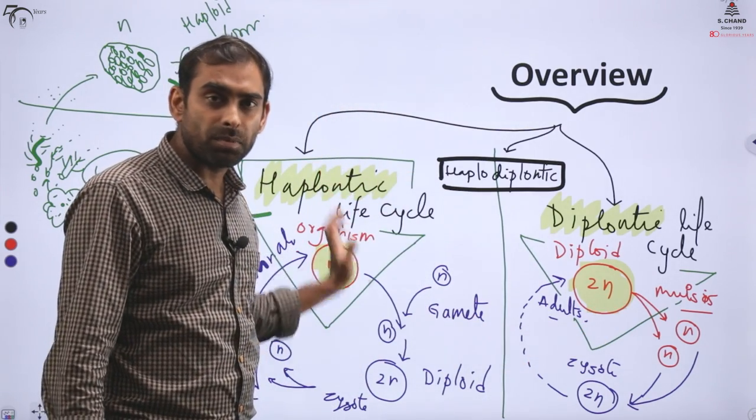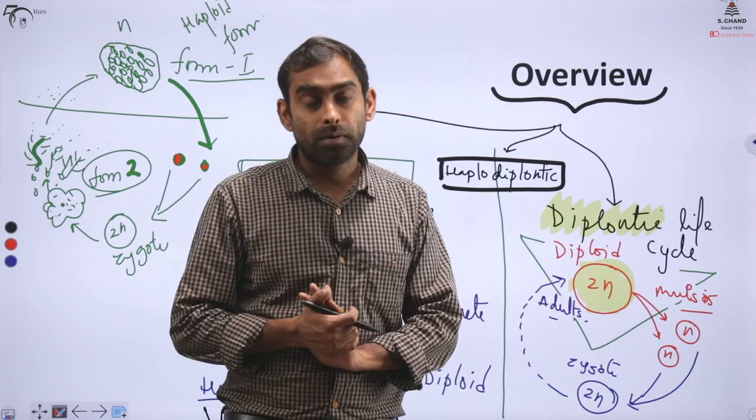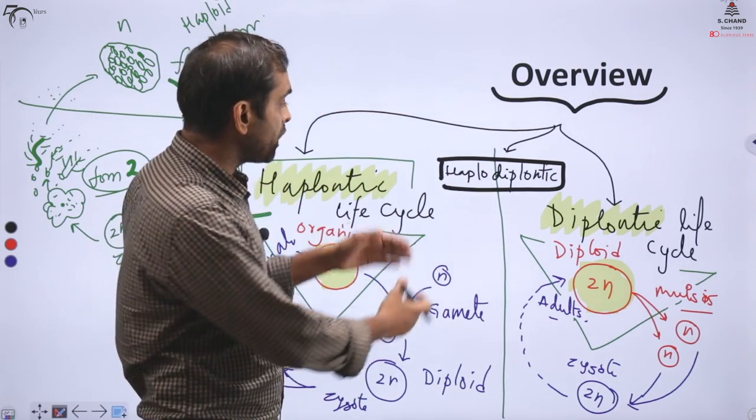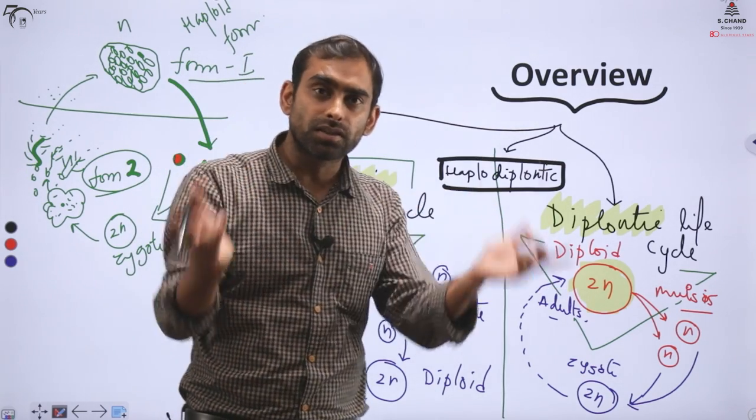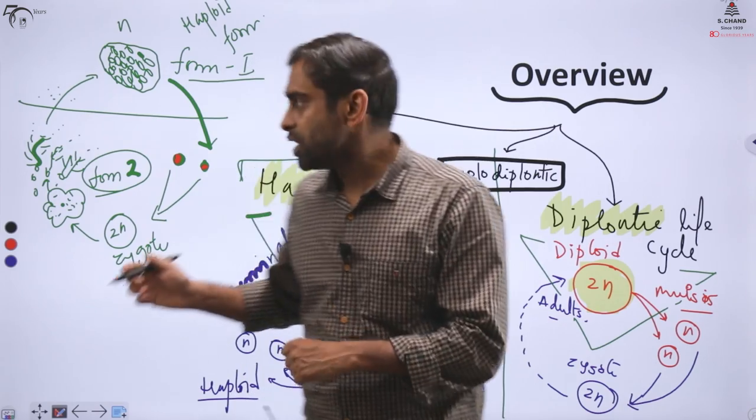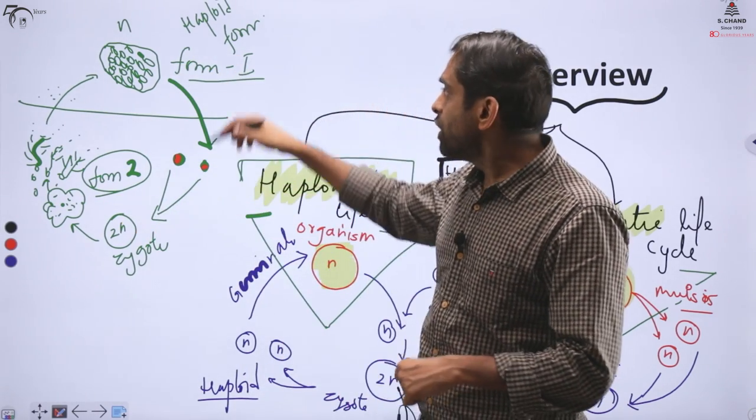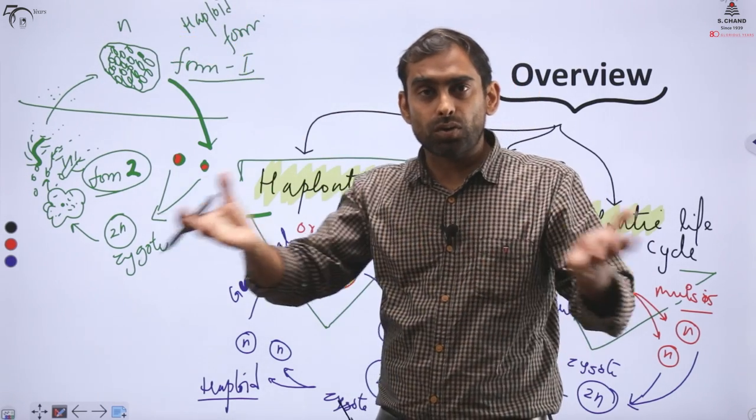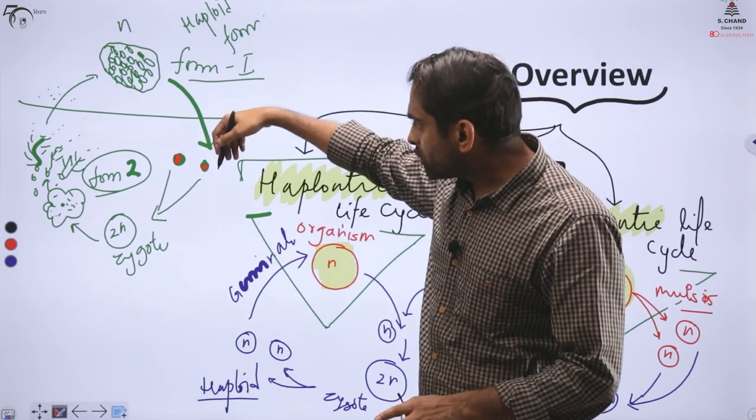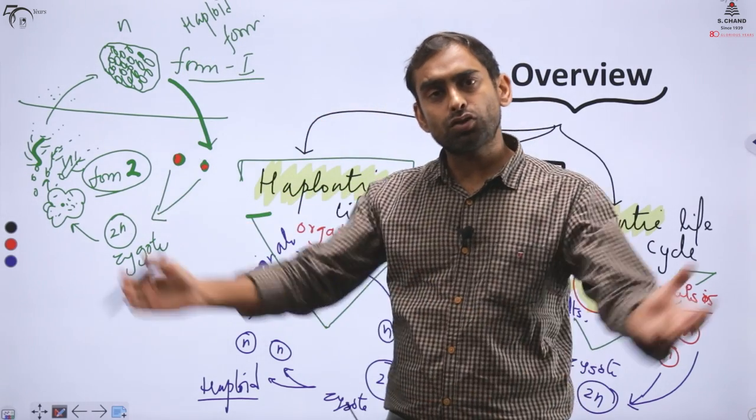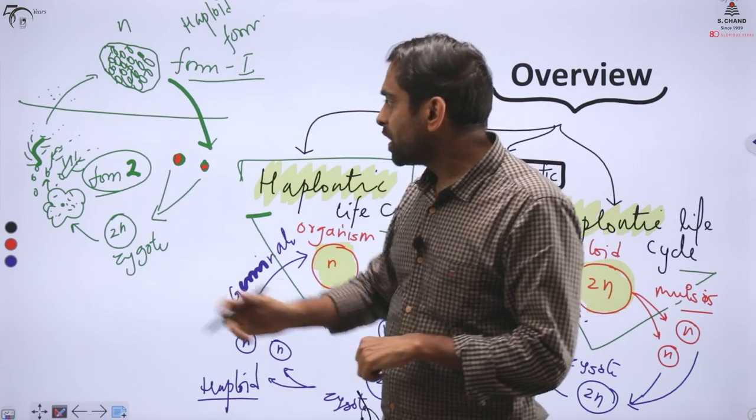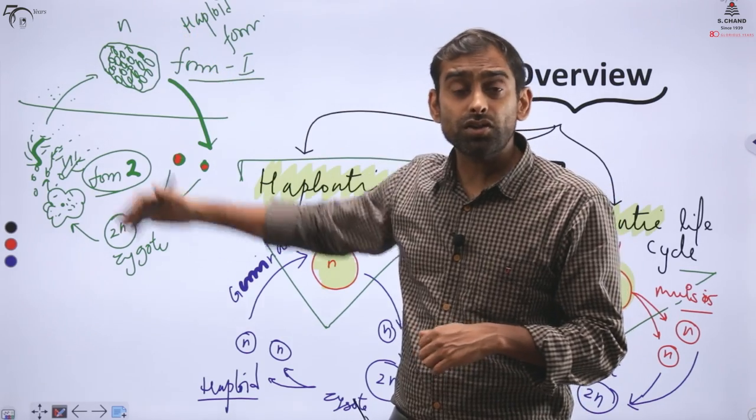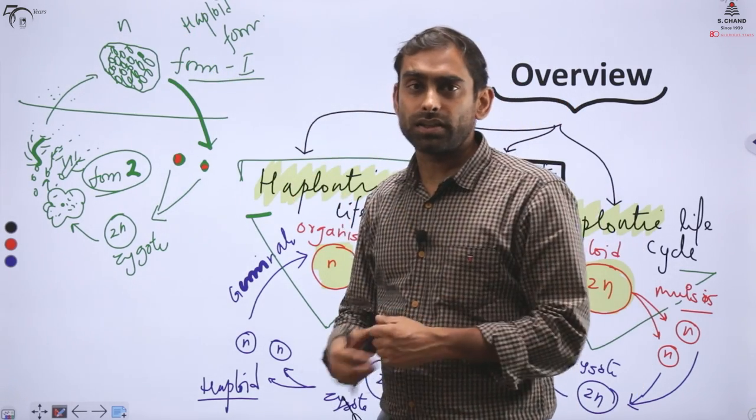So either purely haploid organisms are haplontic, or purely diploid are diplontic, like we humans are diplontic. And lower organisms, some fungi, some algae, microbes, they are haplontic. But algae and fungi are known to have even more complex life forms, where haploid and diploid both types of organisms can exist in their life cycle. We discussed this with this small diagram. We saw one form of organism which may be haploid can also appear as independent organism.